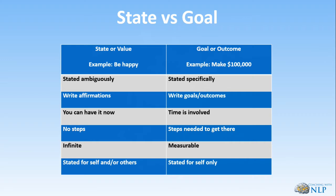Of course there will be times when maybe I'm not feeling quite as happy because something has happened. However, if I can choose to feel happy again, there are no steps really involved to achieve that state, and it can be infinite because I can do it all the time. A state or value can be for self or for others, whereas a goal really should be for yourself — if we're stating a goal for other people, we're probably not going to put in as much effort.